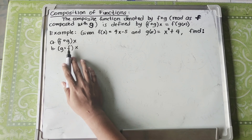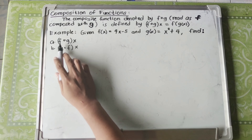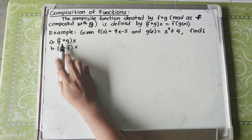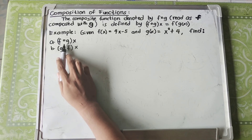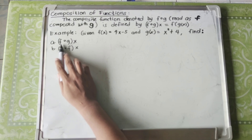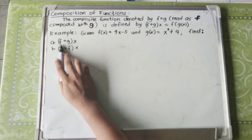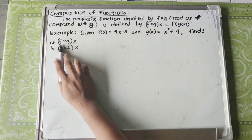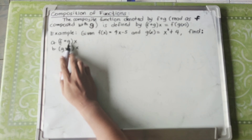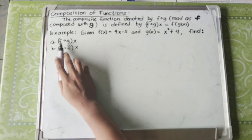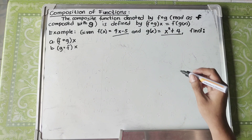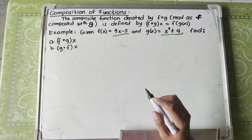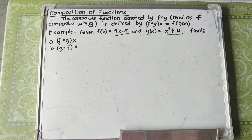Always remember that in the composition of functions, the one that comes first is the one that gets substituted into, and the one that comes second is the one that goes in. In letter A, F composed with G, F comes first so F is the one being substituted into, and G is the second so G goes into F.